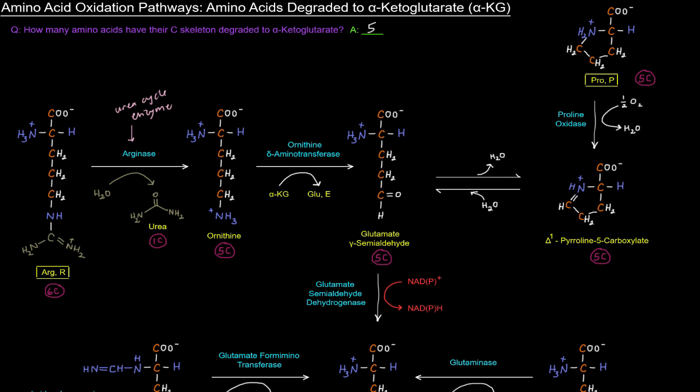And this ornithine is converted into glutamate gamma semialdehyde, which basically gets rid of this amino group here in the side chain, attaches it onto the alpha-ketoglutarate to produce glutamate. Okay, and we get this aldehyde at this carbon right here. All right, we go from that carbon there to aldehyde.